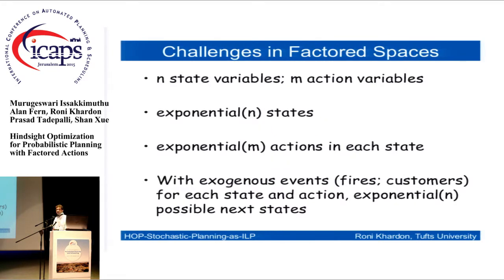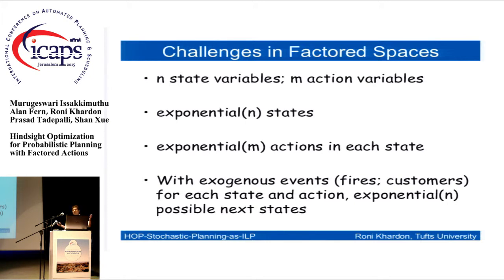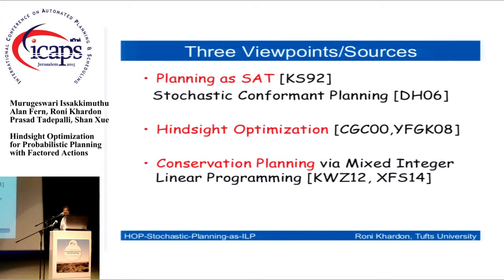Let me stress the point of large branching factor state spaces and action spaces. In many domains, we can think about problem descriptions in terms of n state variables and m action variables, which means we have an exponential number of states — this is standard — but also an exponential number of actions. For example, in a large elevator building with many elevators, you have variables to control each elevator, giving you an exponential number of combined actions. We also often have exogenous events, like people arriving at elevators, creating an exponential branching factor in the number of possible next states.